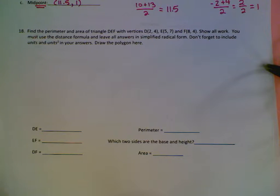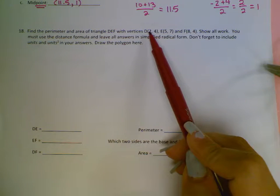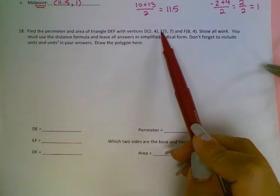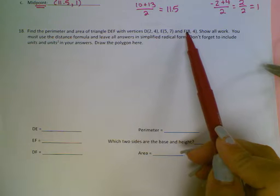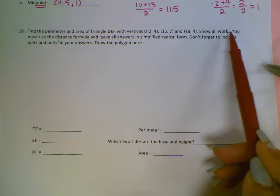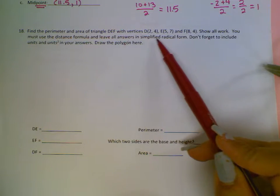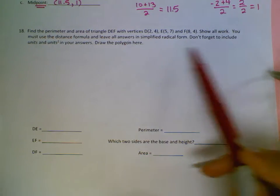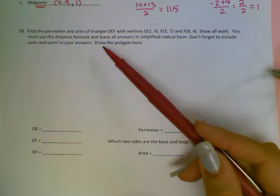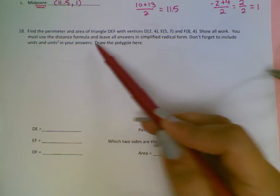Number 18 says to find the perimeter and the area for triangle DEF with vertices D being at 2, 4, E at 5, 7, and F at 8, 4. Show all work. You must use the distance formulas and leave all answers in simplified radical form. Don't forget to include units and units squared in your answer. Draw the polygon here. It says draw the polygon here.